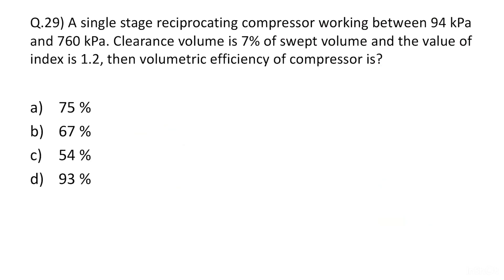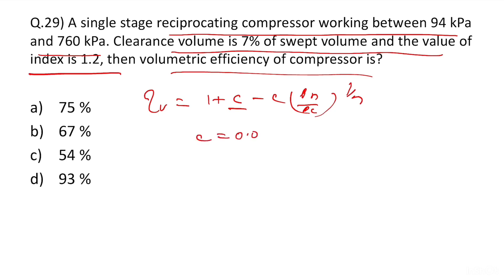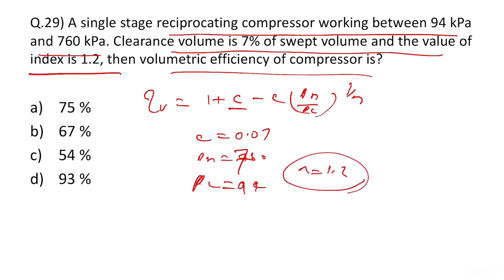Question 29: A single-stage reciprocating compressor with clearance volume C = 0.07, pressure ratio P_higher/P_lower = 760/94, and index N = 1.2. Volumetric efficiency = 1 + C − C·(P_higher/P_lower)^(1/N). Substituting all values directly gives the answer as approximately 67%.